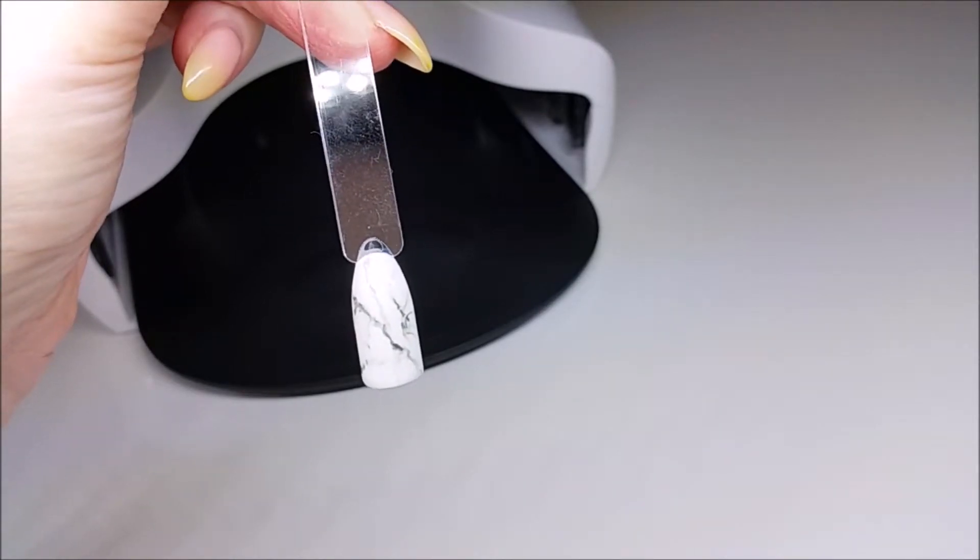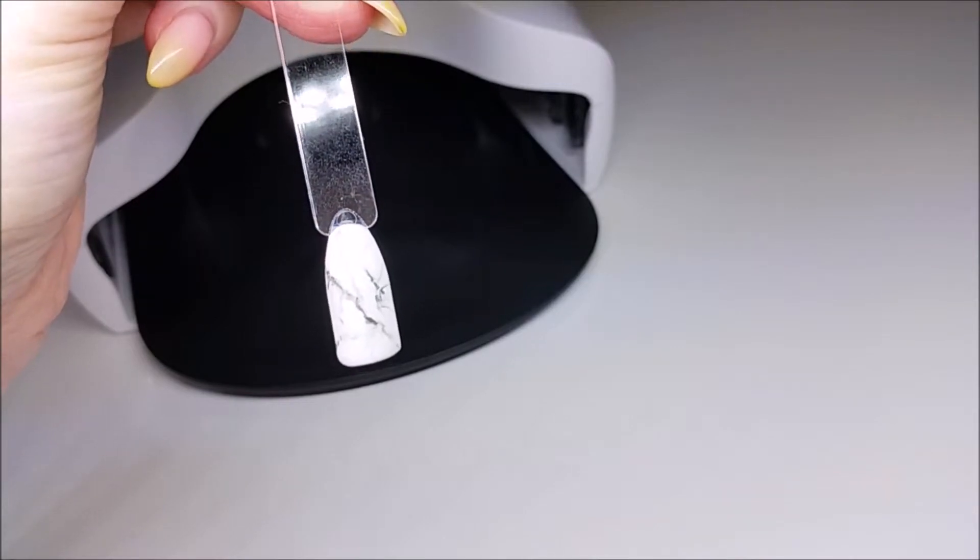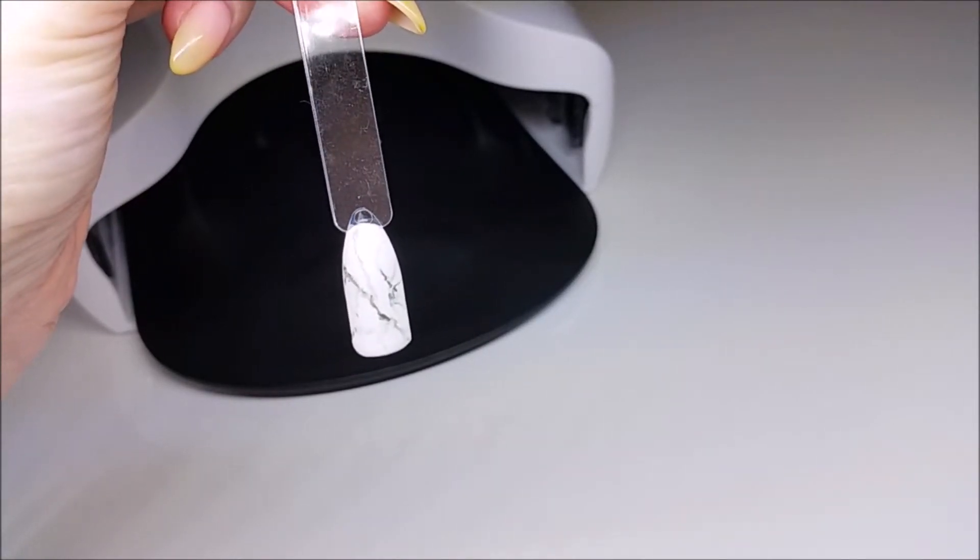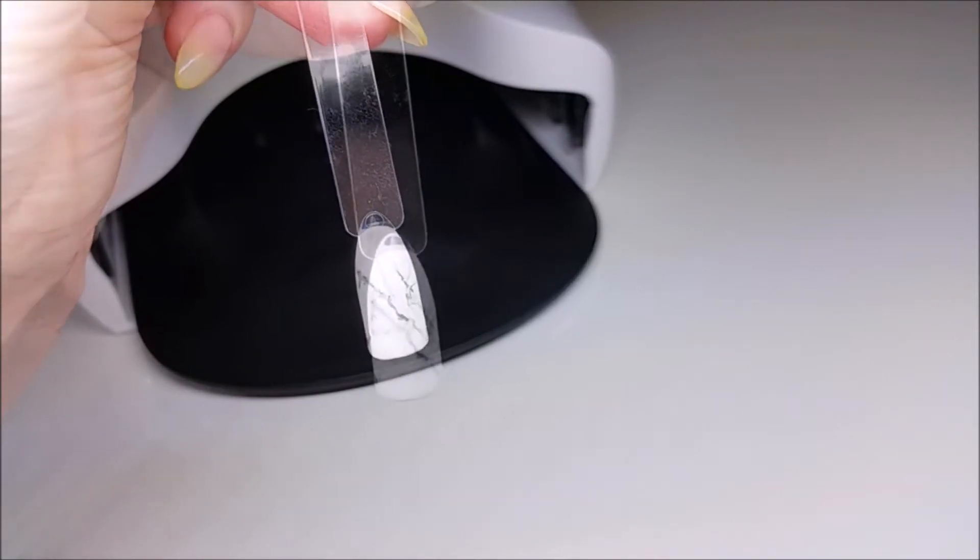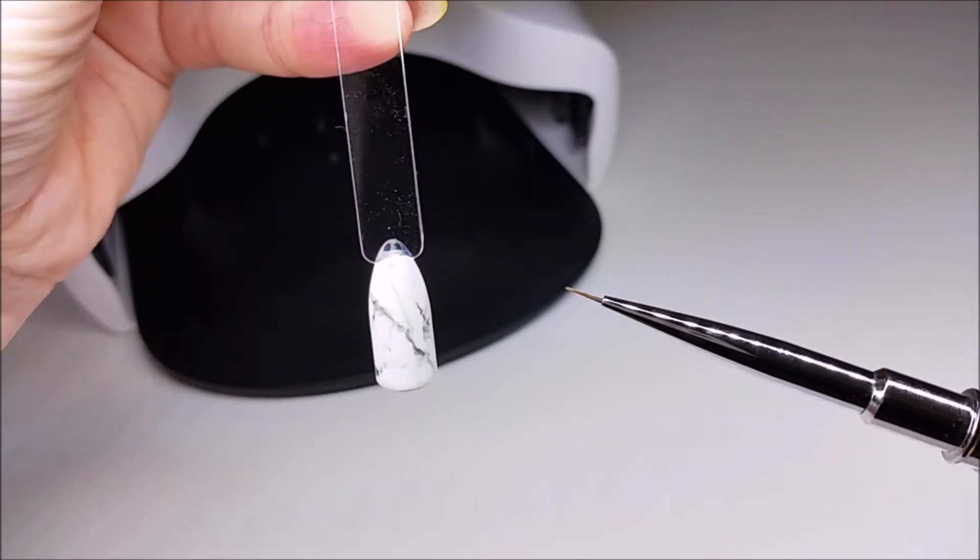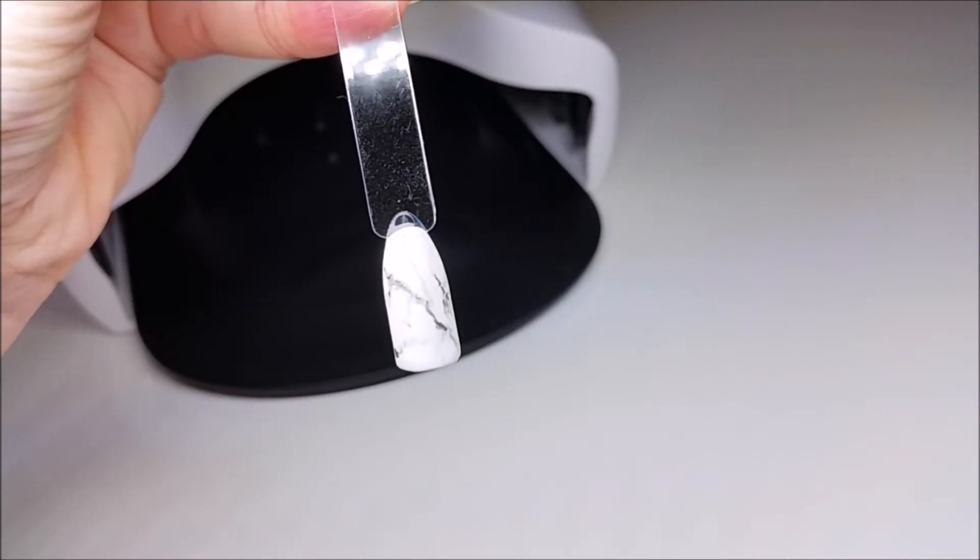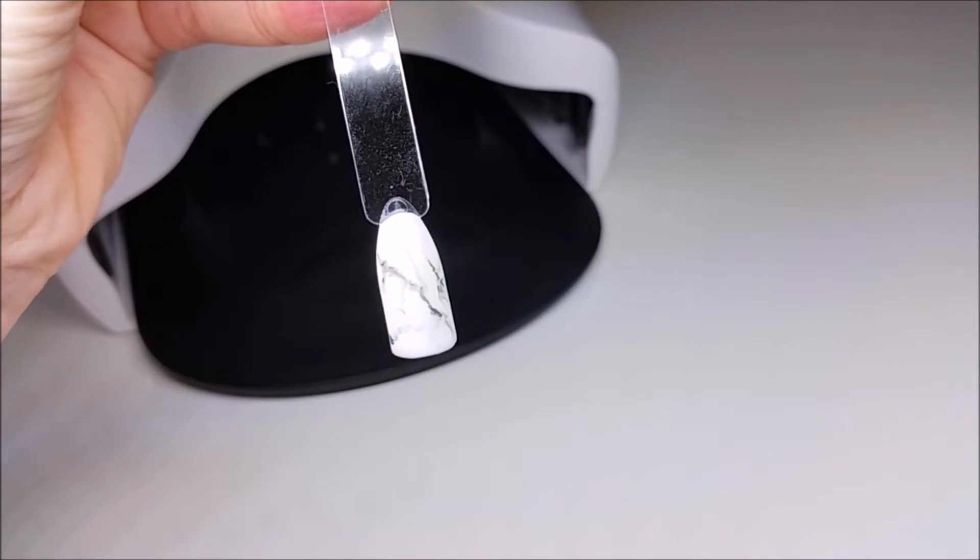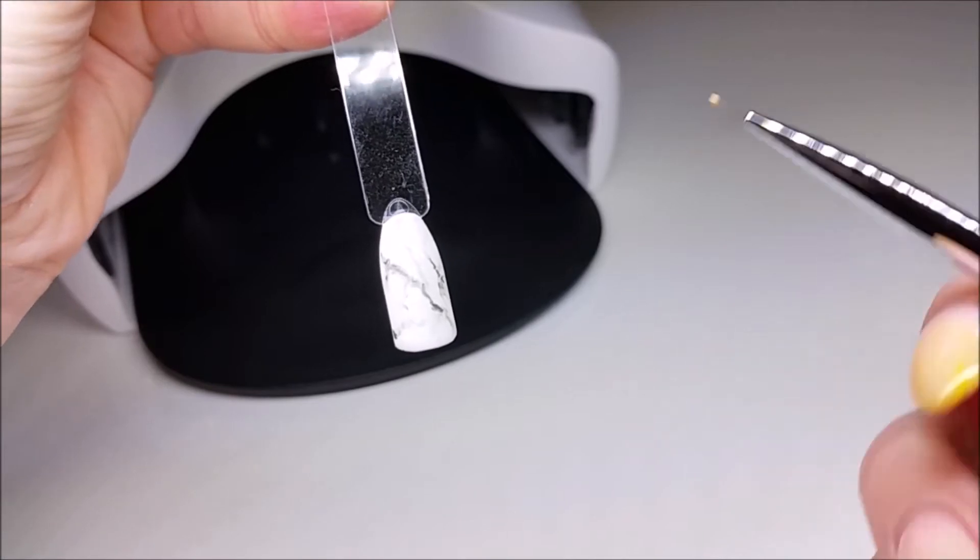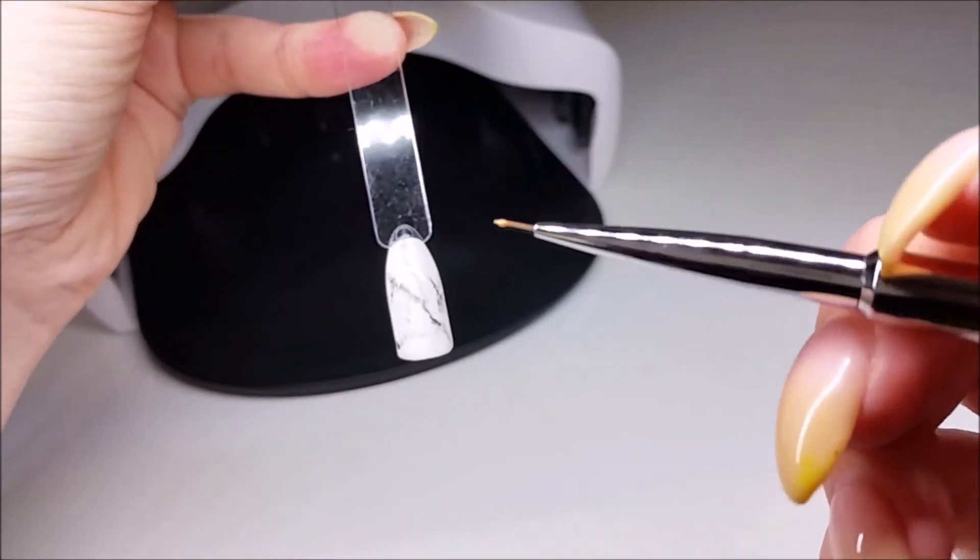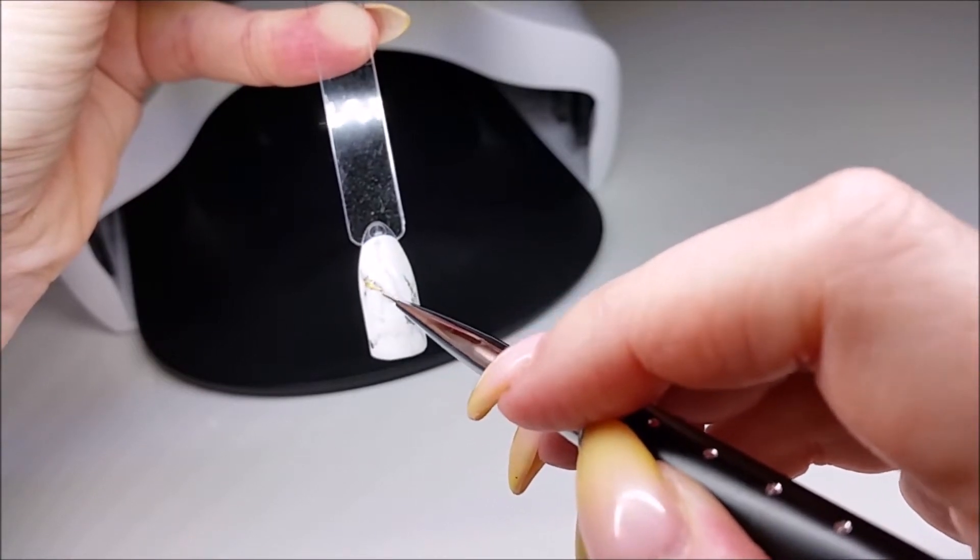So I'm quite happy with how that's looking. So I'm just going to clean off my brush, and I'm going to go in with a little bit of gold as I find that most natural marbles do have a little bit of gold fleck in them. So I've cleaned off my brush now. This layer here is still uncured. I'm just going to get a little bit of gold on my brush, and I'm just going to go into the design and just pop little flecks of gold wherever I feel like they should go.